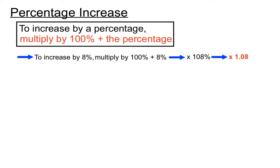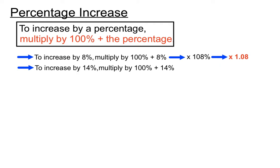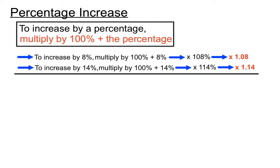Let's have a look at another version. To increase something by 14 percent, we add that 14% to 100%, meaning we multiply by 114%. The decimal version of that is 1.14. So all we do is multiply whatever amount we want to increase by 1.14.